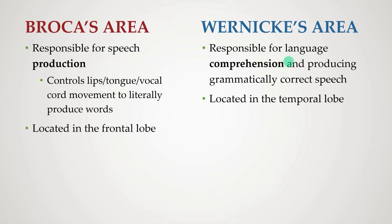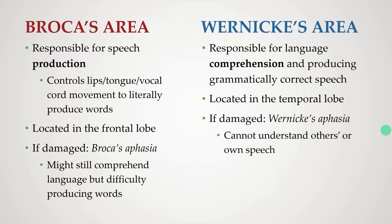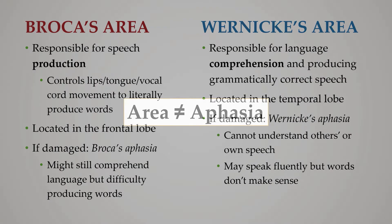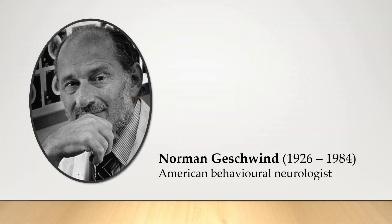There is a little bit of overlap — Broca's area has more recently been shown to also assist in comprehension. But generally speaking, these labels hold true: when Broca's area was damaged, people could comprehend language but couldn't produce words; when Wernicke's area was damaged, people couldn't understand speech and may have spoken fluently but their words didn't make sense. It's very important to distinguish between Broca's area and Broca's aphasia — do not mix the two terms up. If an exam question asks what Wernicke's area does, answering by describing symptoms (like 'word salad') does not actually answer the question.